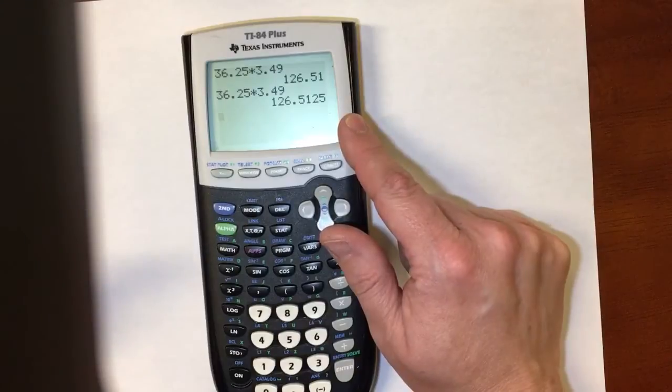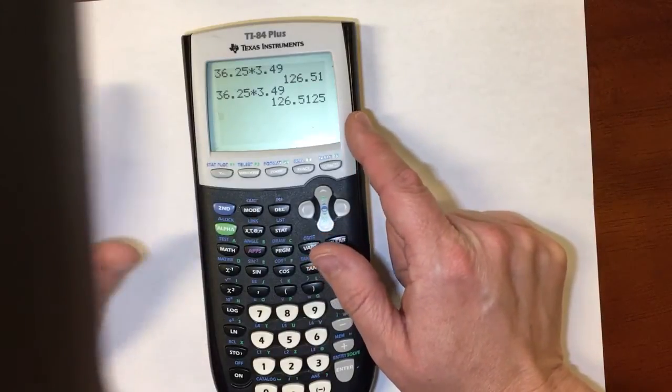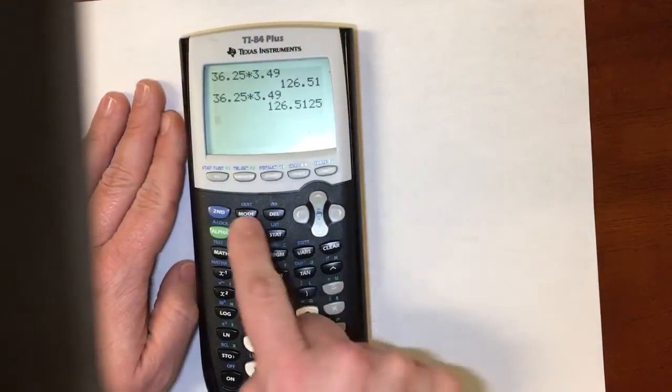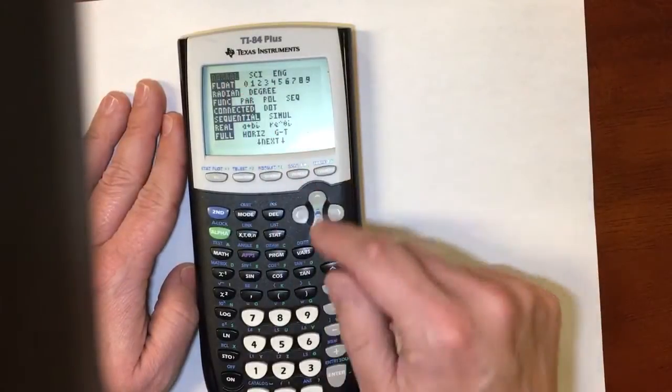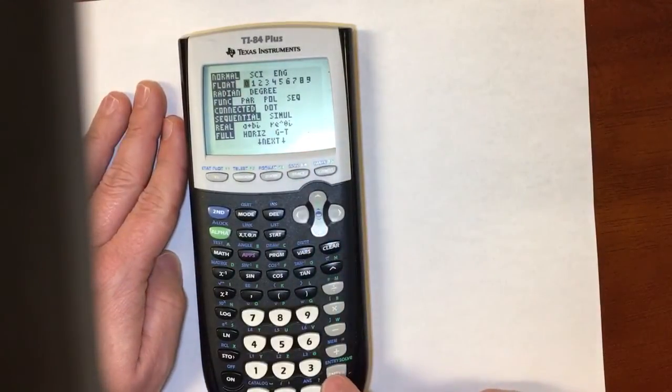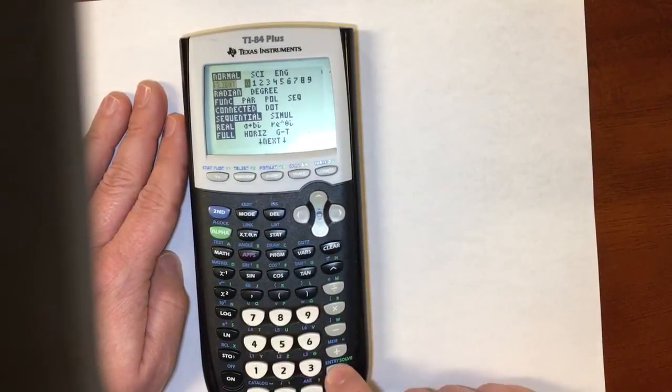So you can use this to help you round, but make sure you know when it's turned off or turned on. Sometimes people will go to float and put it on zero, which means it's not going to have any decimal places.